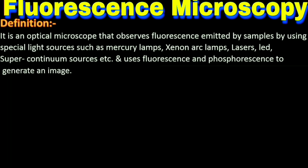It uses special light sources such as mercury lamp, xenon arc lamp, laser, LED, and super continuum sources, etc., and uses fluorescence and phosphorescence to generate an image. So the definition is: it is an optical microscope that observes fluorescence emitted by a sample using special light sources such as mercury lamp, xenon arc lamp, laser, LED, and super continuum sources, and uses fluorescence and phosphorescence to generate an image.